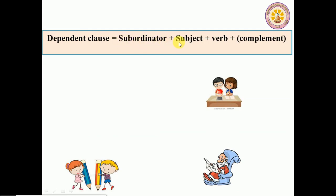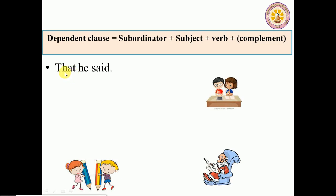The structure of a dependent clause is: subordinator plus subject plus verb, but it is not complete. For example: 'that he said' — this sentence starts with the word 'that.' We don't know what he said, so this is not complete. It is only part of a sentence, which we call a dependent clause or sub-clause.